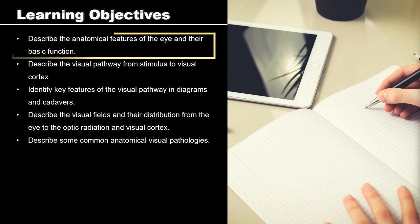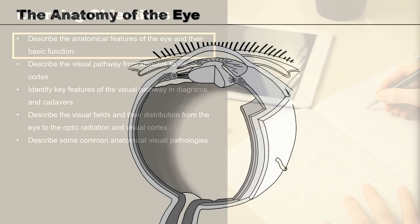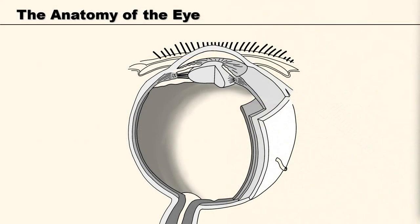So first, let's go and have a look at the anatomy of the eye. The eye can be quite difficult to get to grips with, as there are lots of interesting parts of the eye that form how we see the world.